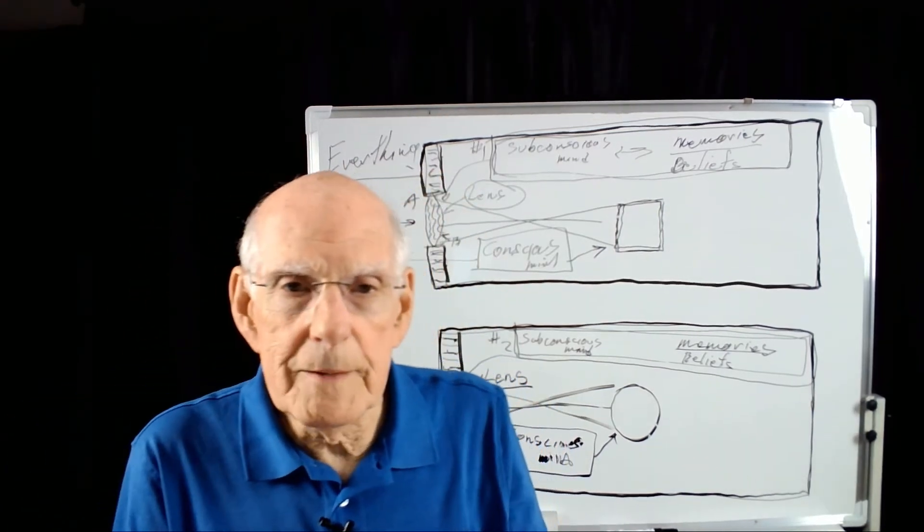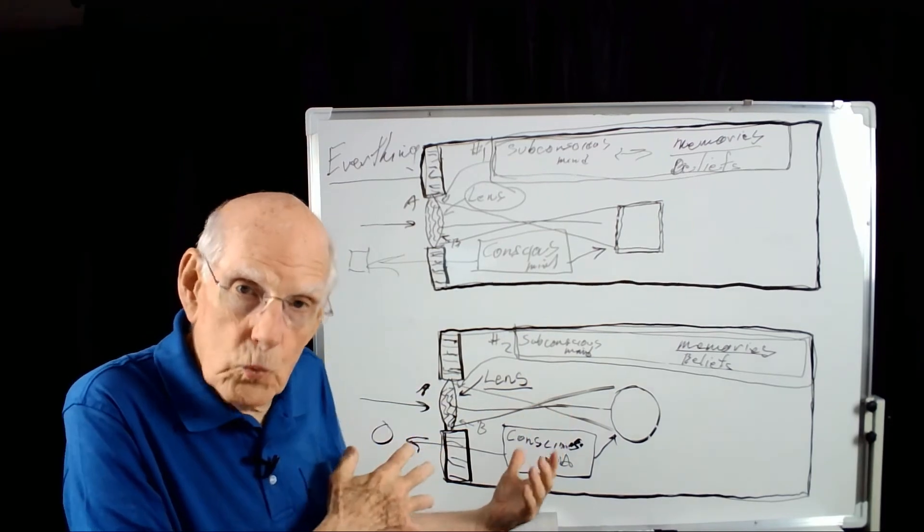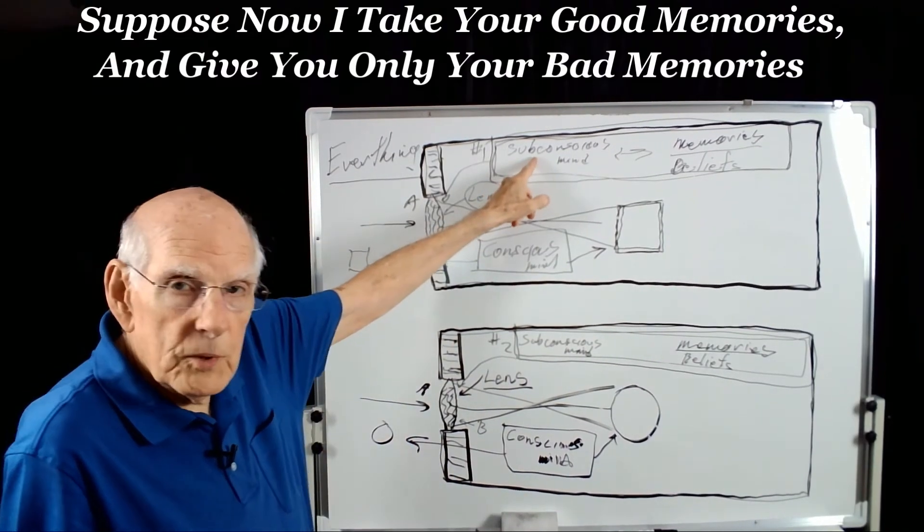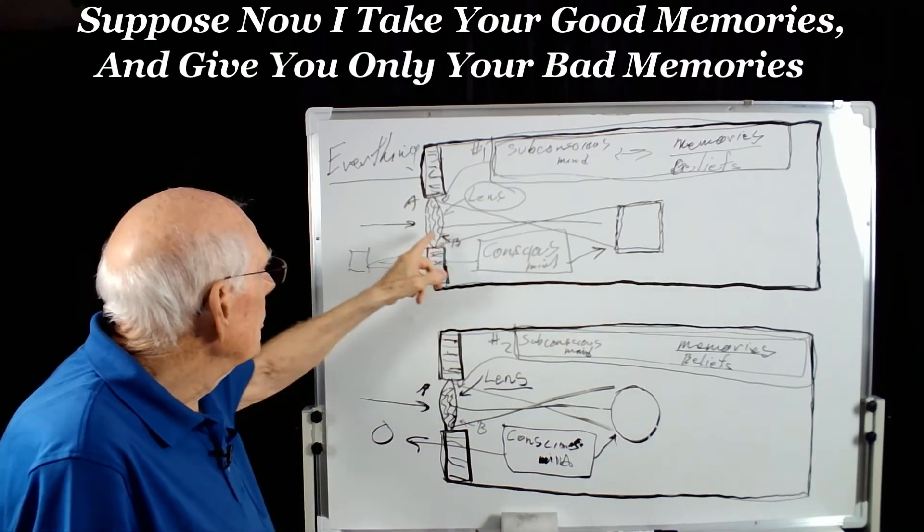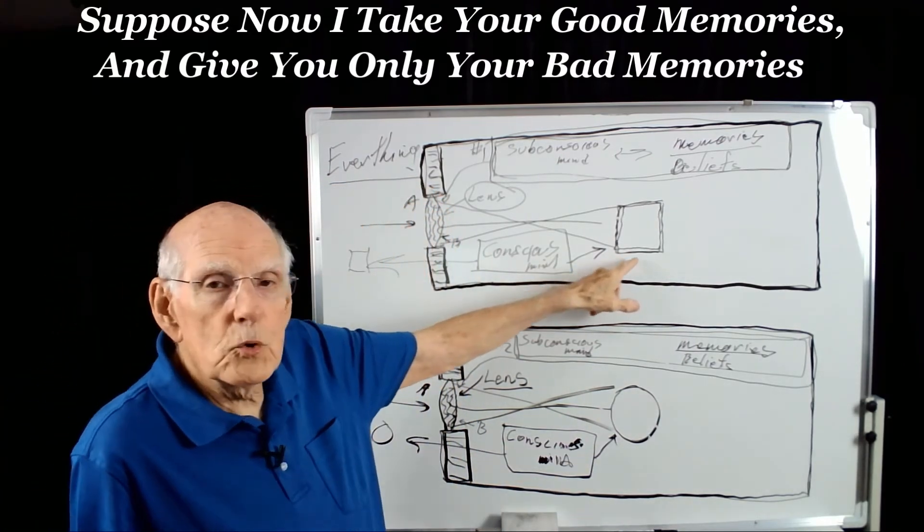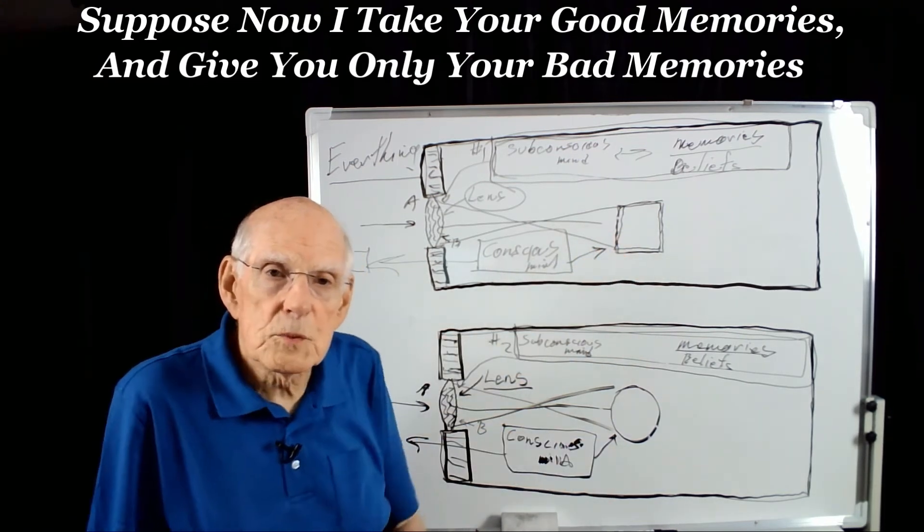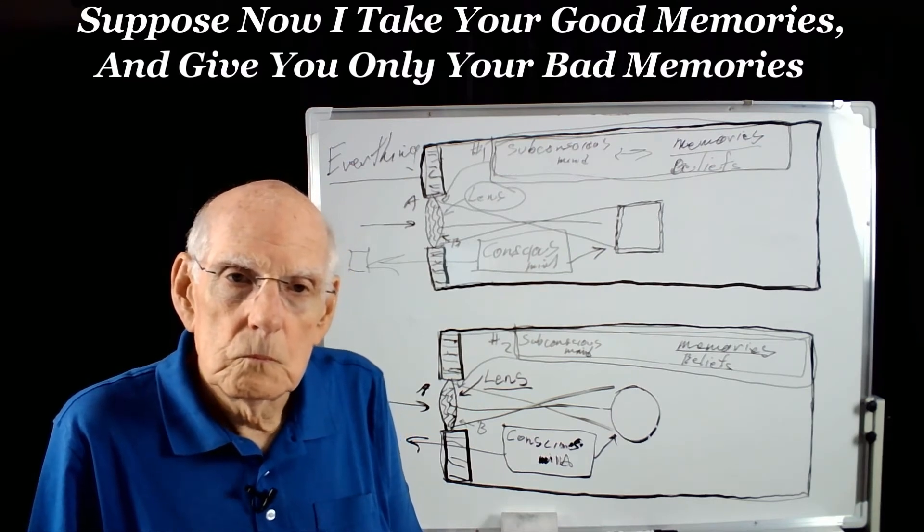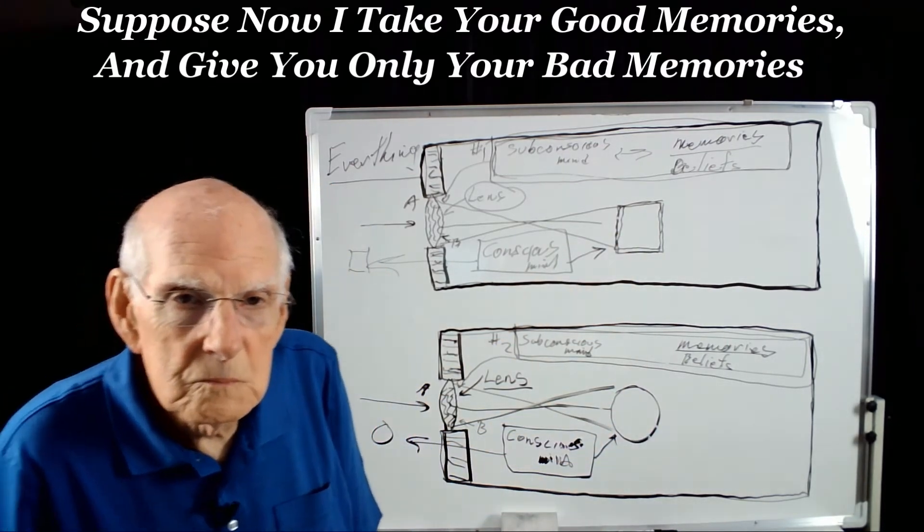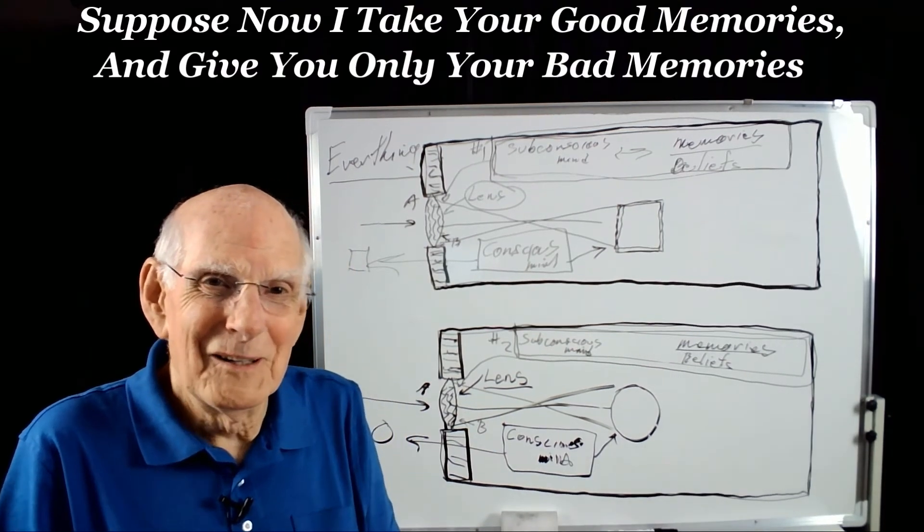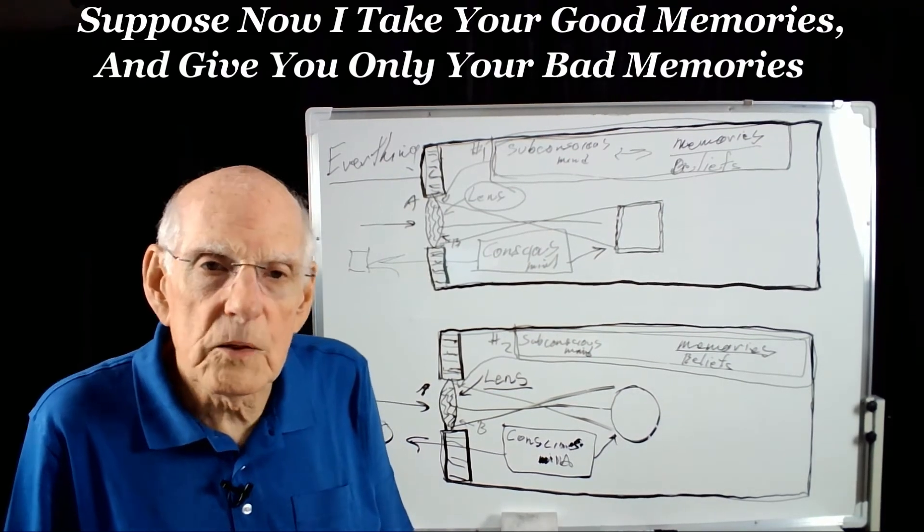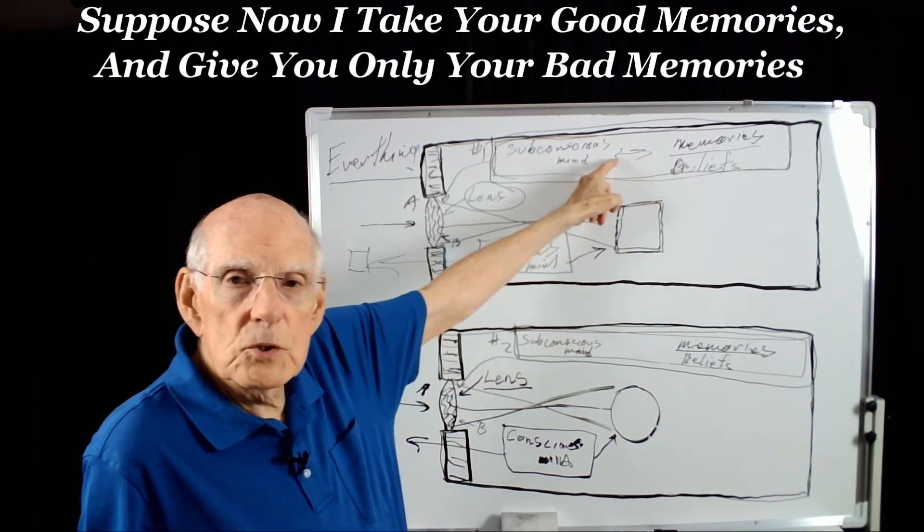Now, again, in this little experiment, I'll take all your good memories away from you and give you your bad memories. Now, all you got is bad memories. That's all you have up here, bad memories. Bad memories. What information are you going to get through your lens? What kind of world are you going to create inside? All you got is bad memories. Terrible world. Will these two be the same? No, there'll be two different terrible worlds. And what do we call this? Video? Many worlds. So you can create many worlds inside yourself, which you do all the time, depending on what you're doing in your subconscious mind.